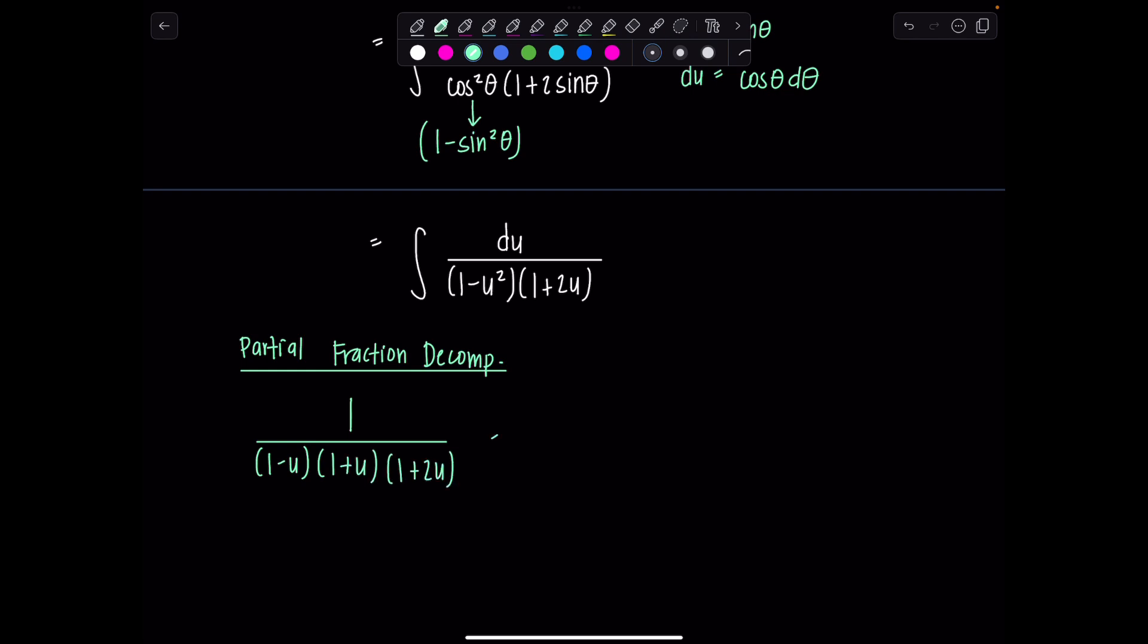The denominator is composed of entirely linear factors. So the decomposition will just have the form a over 1 minus u plus b over 1 plus u plus c over 1 plus 2u. Perfect. So next step, you're going to multiply everything by the LCD, which in this case is 1 minus u, 1 plus u, and 1 plus 2u.